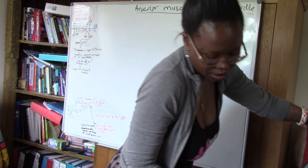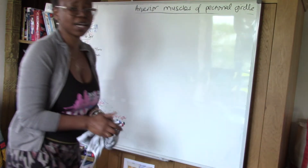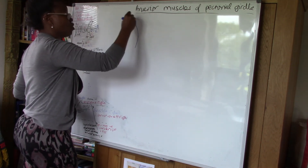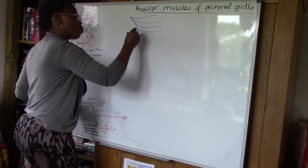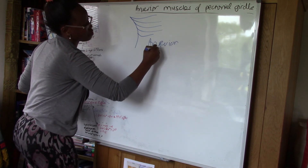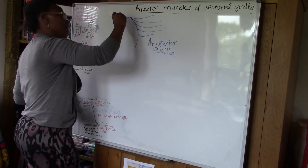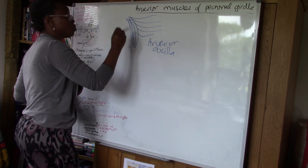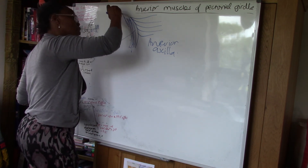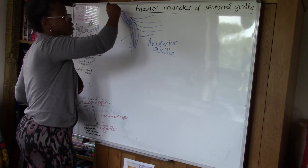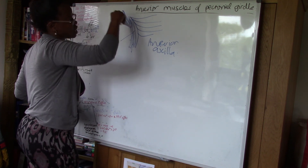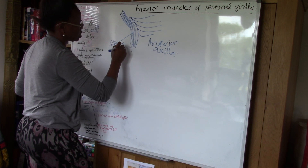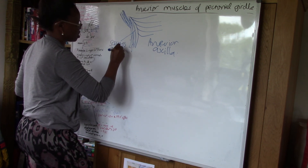The muscles we've discussed form important boundaries. Pectoralis major forms the anterior aspect of the axilla. Serratus anterior, whose fibers lie along the lateral thoracic wall, also contributes to forming the axillary boundaries — similar to the trapezius in position. Serratus anterior forms part of the medial wall of the axilla.